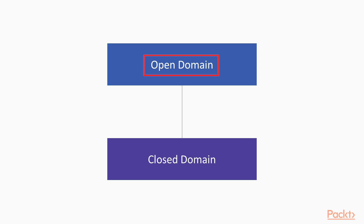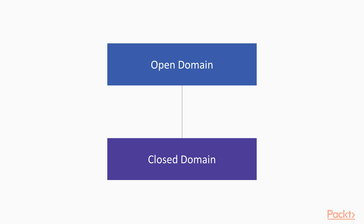Open domain questions are not constrained to a certain domain. For example, you can expect questions about the weather, Hollywood, and the Nobel Prize winner this year. Closed domain questions target a certain domain. For example, if you have an automotive company, you'd expect questions about your products and your pricing, rather than Hollywood and Nobel Prize winners.